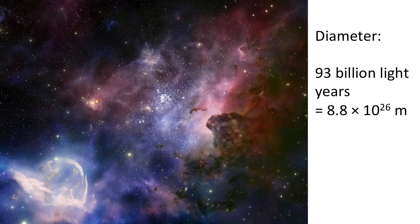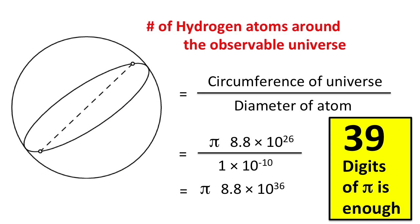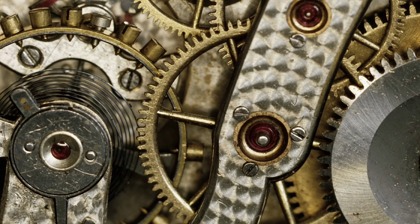Look, the diameter of the universe is 93 billion light-years, and the diameter of a hydrogen atom is about 0.1 nanometers. So knowing pi to 39 places is enough to tell you precisely how many hydrogen atoms you need to encircle the universe. For any mechanical calculations, five digits is more than enough.